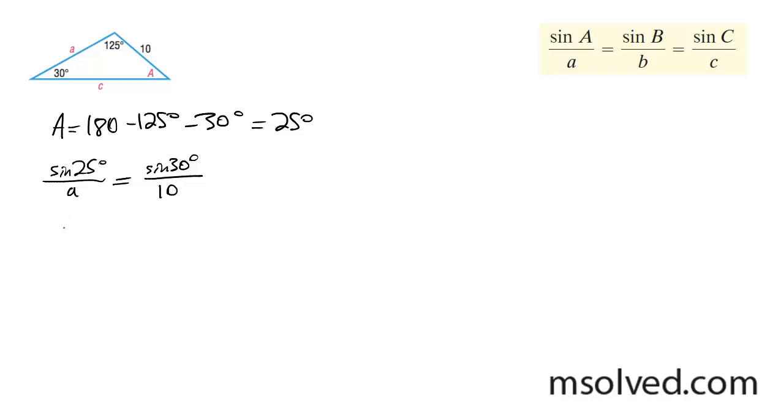I'm going to get A sine of 30 is equal to 10 sine of 25. Finally, A is equal to 10 sine 25 degrees over sine of 30, which gets me 8.45.